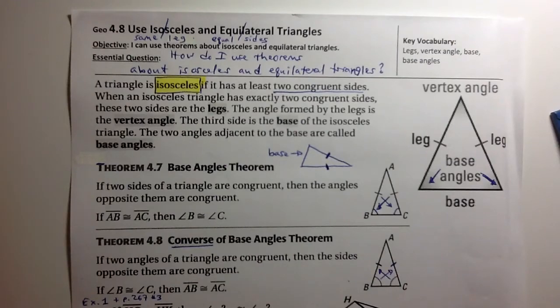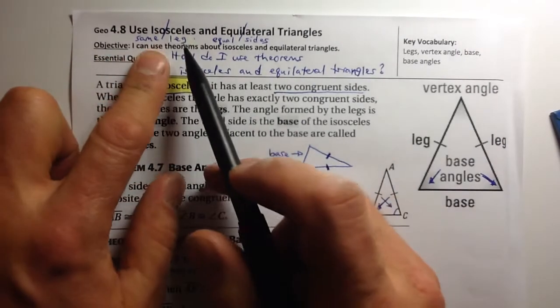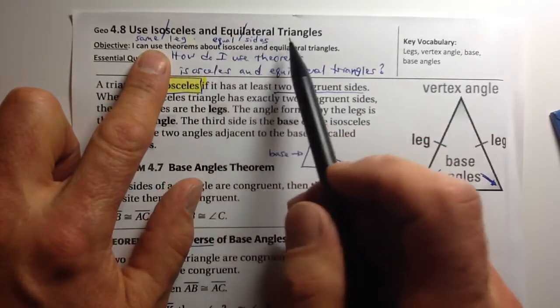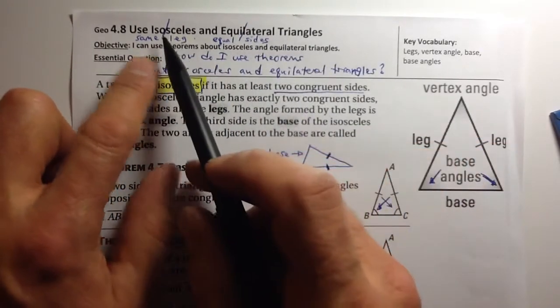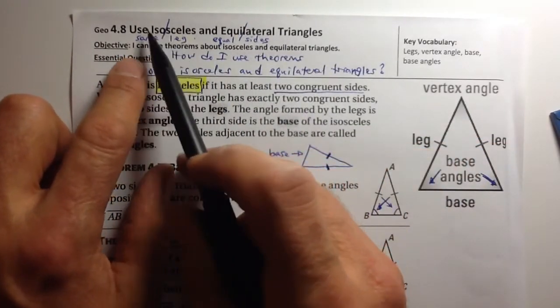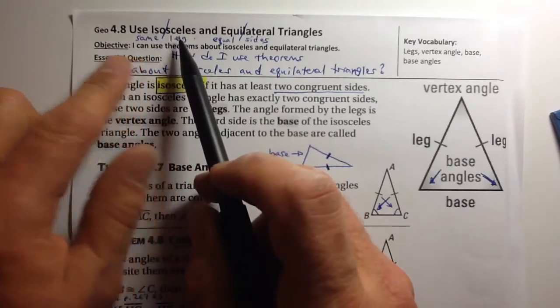Welcome to 4.8. We're looking at using isosceles and equilateral triangles. As you're familiar with, isosceles — 'iso' means same.